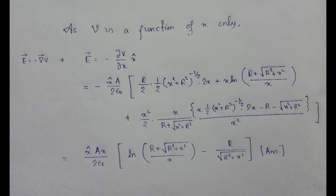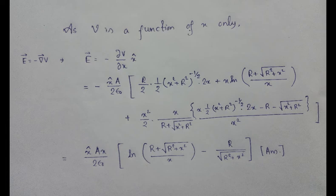Taking the partial derivative of V with respect to x and simplifying: E-vector equals minus x-hat times A over 2 epsilon-naught, times R over 2 times one-half times (x-squared plus R-squared) to the power minus one-half times 2x, plus the x times ln terms. After simplification, the final result is: E equals x-hat times A times x over 2 epsilon-naught, times ln((R-squared plus root(R-squared plus x-squared)) over x) minus R over root(R-squared plus x-squared). This is our answer.